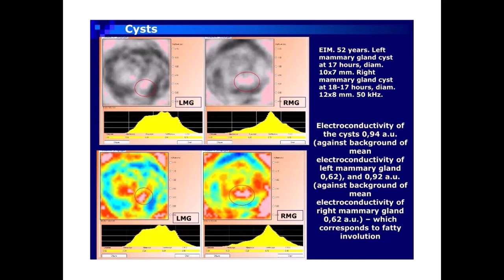Cysts EIM case: 52 years. Left mammary gland cyst at 17 hours, Di-AM 10 × 7 mm. Right mammary gland cyst at 18–17 hours, Di-AM 12 × 8 mm, at 50 kHz. Electroconductivity of the cysts: 0.94 AU against a background of mean electroconductivity of the left mammary gland of 0.62, and 0.92 AU against a background of mean electroconductivity of the right mammary gland of 0.62 AU, which corresponds to fatty involution.